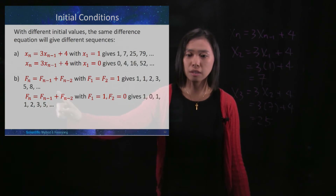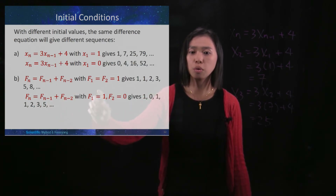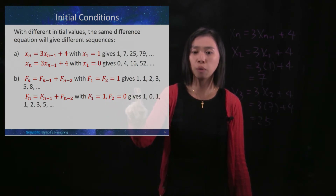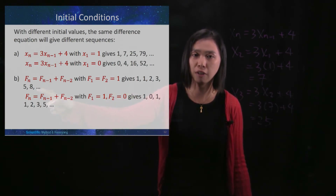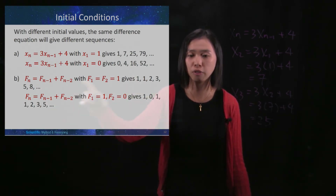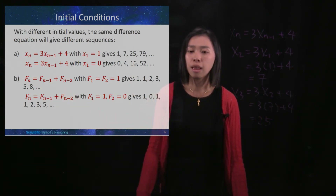Now this is the Fibonacci sequence. You start with f₁ = 1 and f₂ = 1, which gives you 1, 1, 2, 3, 5, 8, and so on. I assume that you are very familiar with this one.